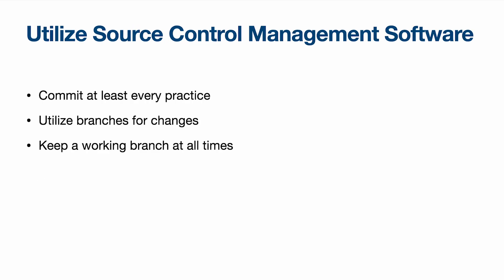Another useful thing I always do is utilize source control management. I commit at least every practice, if not four, five, or even ten times per practice. I usually branch for all changes or practices and keep a working branch at all times, using branch protections on my main branch. If I haven't tested it on the robot, I can't commit it to main. The main branch has to be working all the time, no matter what. That way, if something breaks, even if I lose a whole laptop, I can go to another one, download all my code, and get started within five minutes — which is invaluable in competitive robotics.